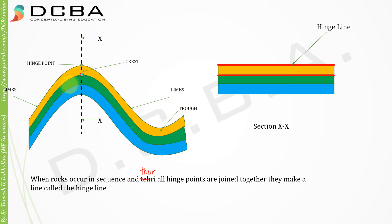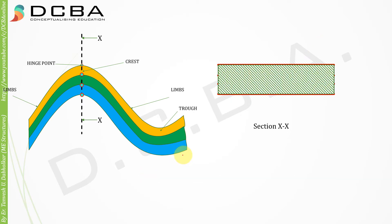Similarly, for the second layer (the green layer), the hinge line would be here, and for the third layer it will be here. By connecting points we form a line, and by connecting lines we get a surface.